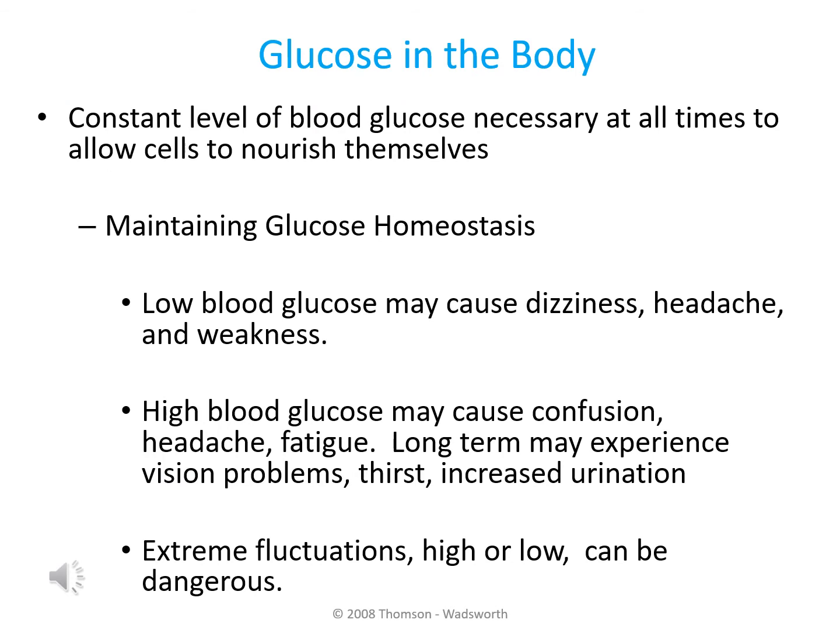We've noted that glucose is our preferred energy source in the body and we want to make sure that we have an adequate amount available in our bloodstream at all times — we want to maintain what's known as glucose homeostasis. If there is a situation where you don't have an adequate amount of glucose in your bloodstream, or you have a low blood glucose level, you can experience symptoms such as dizziness, headache, and weakness. On the other hand, if you have too much glucose in your bloodstream, you can experience symptoms such as confusion, headache, and fatigue. For those who have a longer period of elevated blood glucose, you can experience other symptoms such as vision issues, increased thirst, increased urination — those symptoms basically relating to the onset of diabetes.